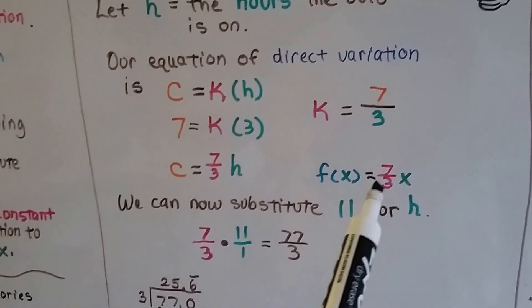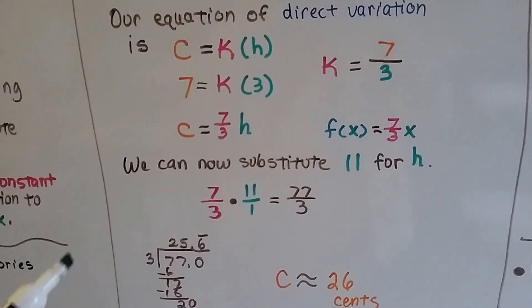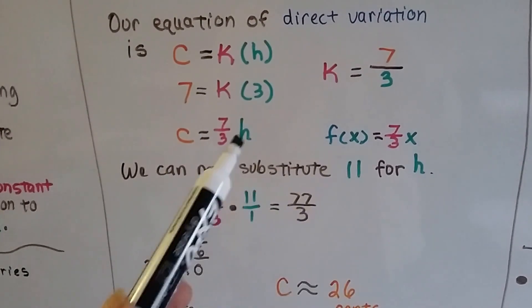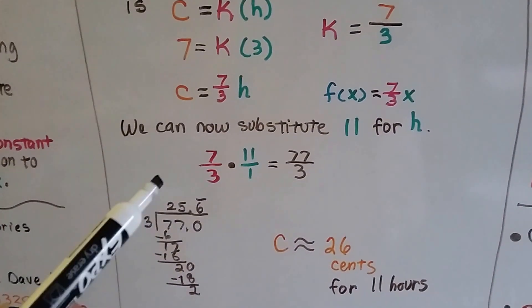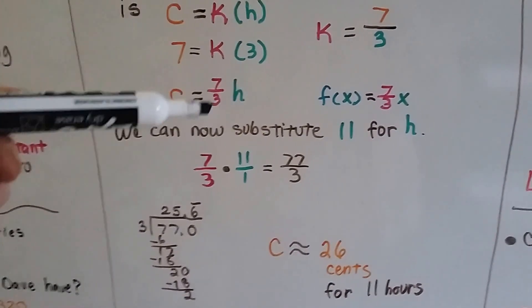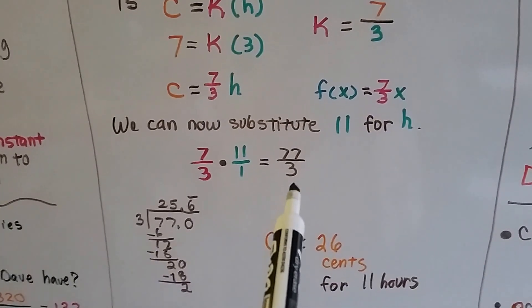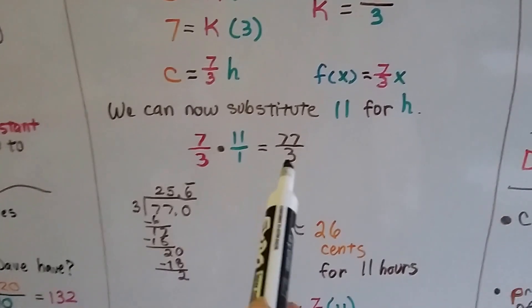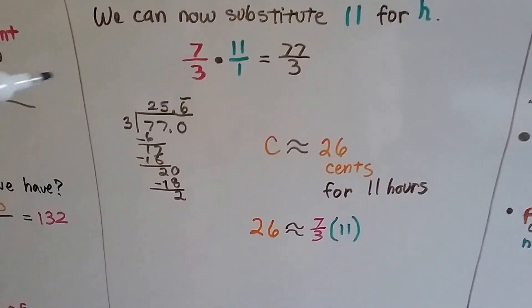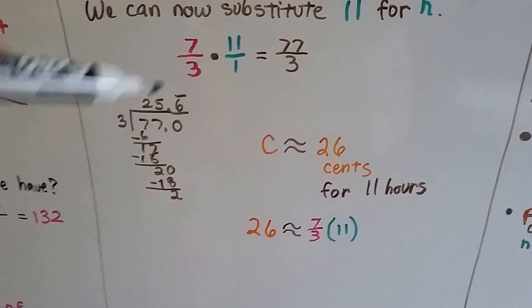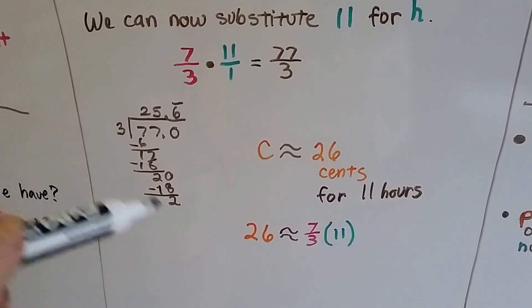We could also write it as the function of x equals 7 thirds x. Now we can substitute the 11 in for that H instead of the 3. We do our multiplication. 7 thirds times 11 is 7 thirds times 11 over 1, and we get 77 over 3. That's a division problem. Let's divide 77 by 3. We get 25.6 and this 6 repeats.